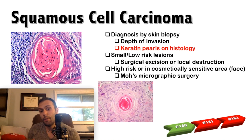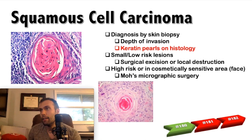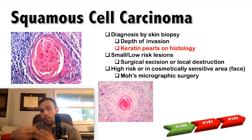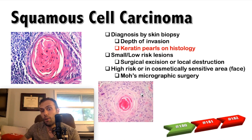For squamous cell carcinoma, you should actually recognize the histology image — it's extremely high yield. Whenever you see a keratin pearl, you need to know right away you're dealing with squamous cell carcinoma. It doesn't have to be on the skin — it could be head and neck cancer or lung cancer with keratin pearls; you have to know squamous cell carcinoma. Go look at 10 pictures of keratin pearls. Classically, you see a very eosinophilic, pink, circular structure representing invasive cords of squamous cells surrounded by keratin pearls. Keratin pearls on histology is classic for squamous cell carcinoma.